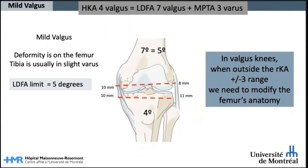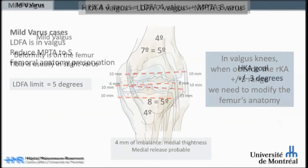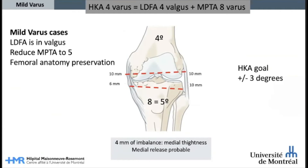Now let's look at the valgus knee. Mild valgus knees have increased valgus of the femur with still some varus on the tibia. In most of these cases, the LDFA is above 5 degrees. So when we are aiming at 3 degrees HKA, we will need to modify the femoral anatomy by bringing down LDFA to a maximum of 5, and it will usually be enough to be within the ±3 threshold for the HKA. So in the valgus knee, femoral modification is unavoidable. This is a typical example of a mild varus where the femur is in 4 degrees of valgus and the tibia in 8 degrees of varus. By reducing the tibia from 8 to 5, we are able to reach our ±3 degree boundaries for HKA. Modification is only required on the tibial side and femoral anatomy is preserved.